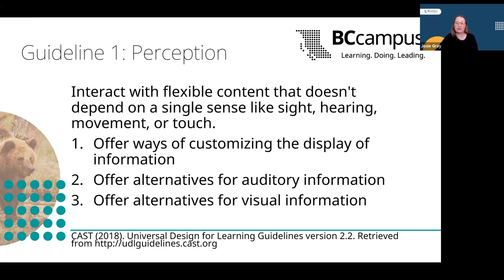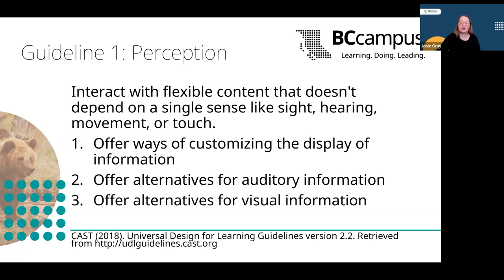The next is to provide alternatives for auditory information. This can include providing transcripts and captions for video and audio, but can also include American Sign Language, visual representations like sheet music or emojis, or visual and tactile experiences for sound effects like vibrations. We also offer alternatives for visual information, which can include text descriptions for images, audio versions of text, tactile graphics and 3D representations. The purpose is to offer students options in how they engage with content and the ability to customize for themselves. To address this guideline, educational resources have to be available in a digital format, as digital allows the reader to adjust the display of text and colors, use assistive technology to read content, and engage with multimedia.